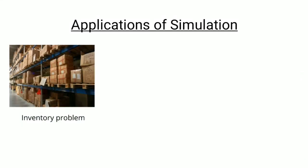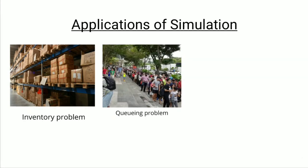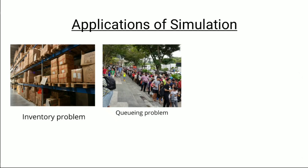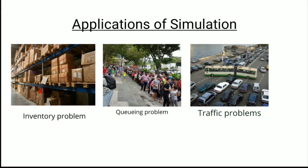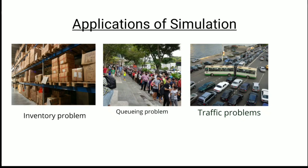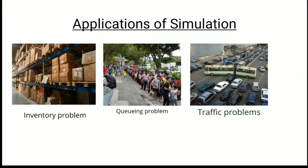Let us see the applications of simulation. Simulation has a number of applications. Some of them are: inventory problems, where simulation helps find the right quantity of stock, the reorder point, and the approximate order value; queuing problems, where simulation can optimize schedules by minimizing waiting time; and traffic problems, where simulation helps predict outcomes at high-traffic areas. Apart from these, simulation can also be applied to social problems such as pollution, population, environment, and health care.